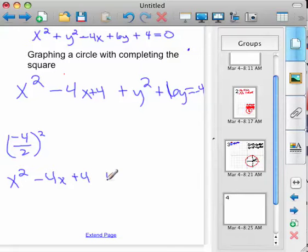I'm going to rewrite this so that I've got some room to work. x squared minus 4x plus 4 plus y squared plus 6y plus, we're going to add something here. And it equals negative 4. And we've added a plus 4. So, I added a 4 here and I have to add it on the other side of the equation to keep the equation balanced.